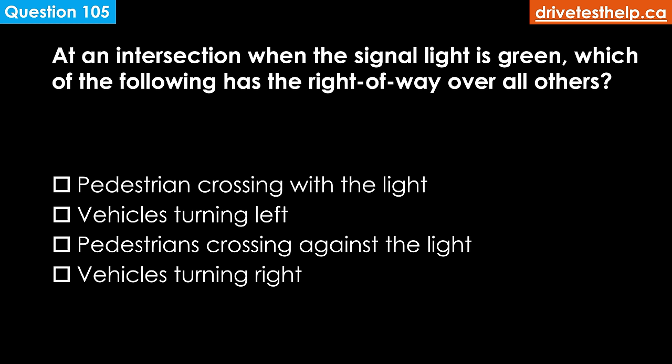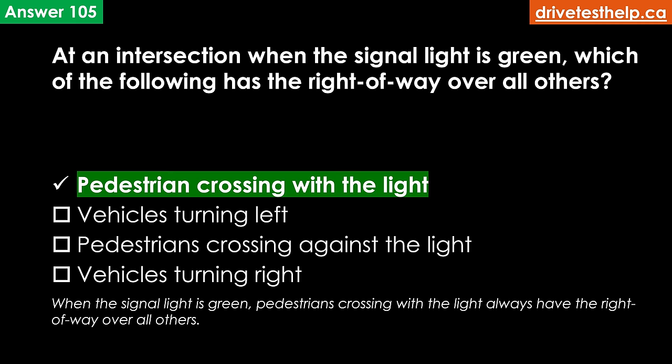At an intersection when the signal light is green, which of the following has the right of way over all others? Options: pedestrians crossing with the light; vehicles turning left; pedestrians crossing against the light; vehicles turning right. The correct answer is pedestrians crossing with the light. When the signal light is green, pedestrians crossing with the light always have the right of way over all others.